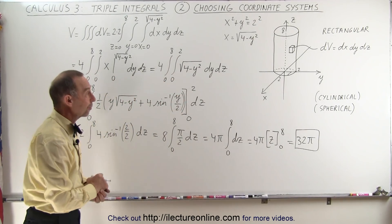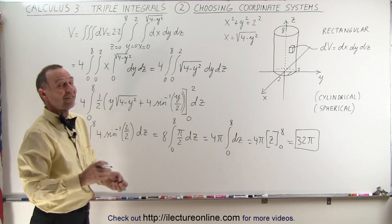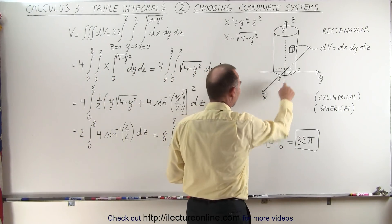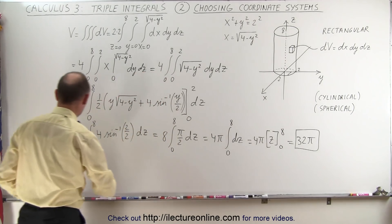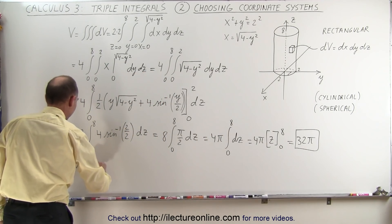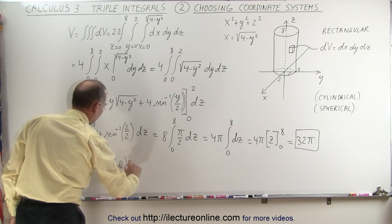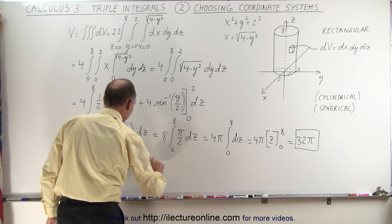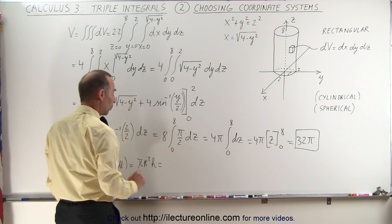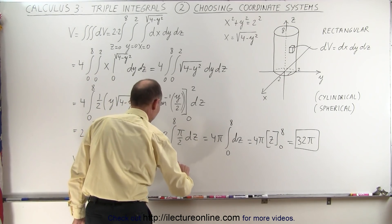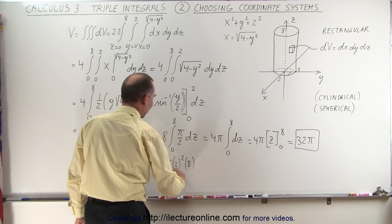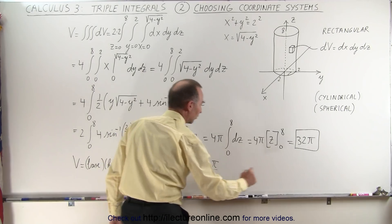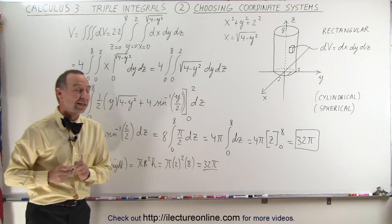Now, let's see if we actually got this correct, because we can easily calculate the volume of the cylinder. The volume is equal to the base times the height. The base is a circle, so it would be πr²h. And so that would be π times the radius, which is 2 squared, times the height, which is 8. That's 4 times 8, which is 32π. And sure enough, we got the same answer. So we know we did it correctly.